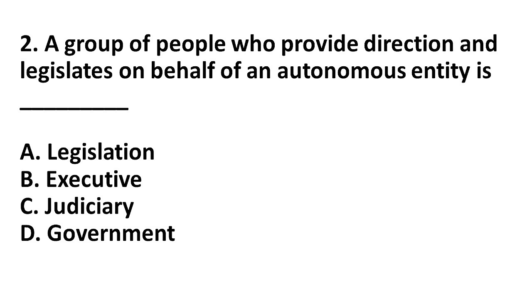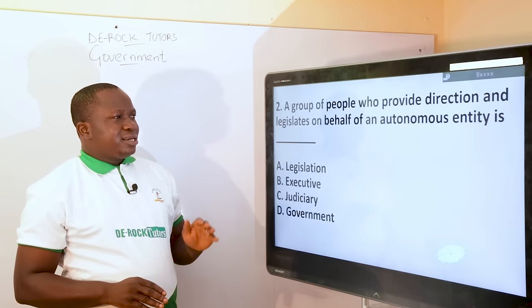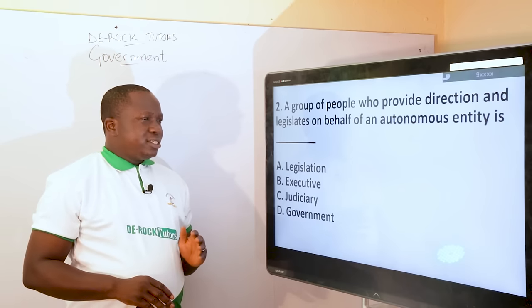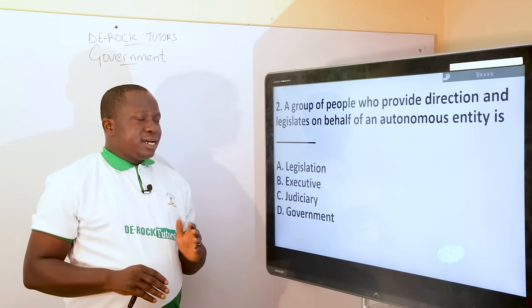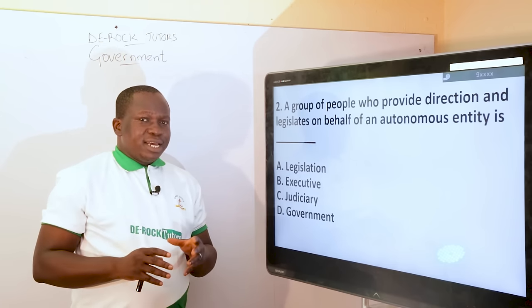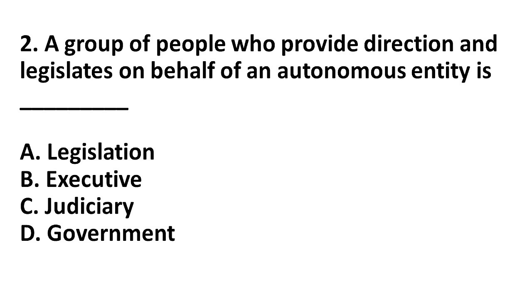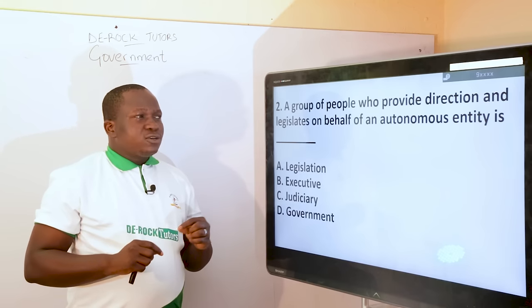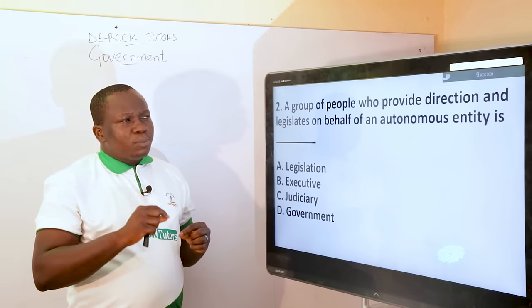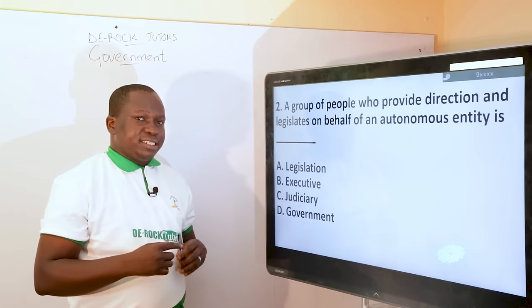Now to the second question: a group of people who provide direction and legislate on behalf of an autonomous entity. We have to take it bit by bit. It says providing direction and legislating. One might be quick to think the answer is legislature. The entity or agency that legislates is the legislature. Legislation in government refers to the process of making laws — or can refer to laws themselves. But the question is not asking for only legislation; it is also asking for the body responsible for providing direction, which involves generating and formulating policies.